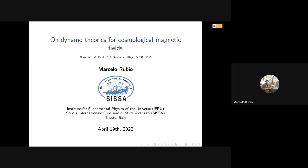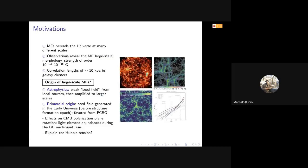The motivation: magnetic fields pervade our universe at many scales, from planets and stars to large-scale structures of galaxies and galaxy clusters. There are observations that reveal the strength or magnitude of these magnetic fields in cosmic voids, for example, and in filaments of around 10 to the minus 16 or 10 to minus 15 gauss with some correlation length of 10 kiloparsecs in galaxy clusters.